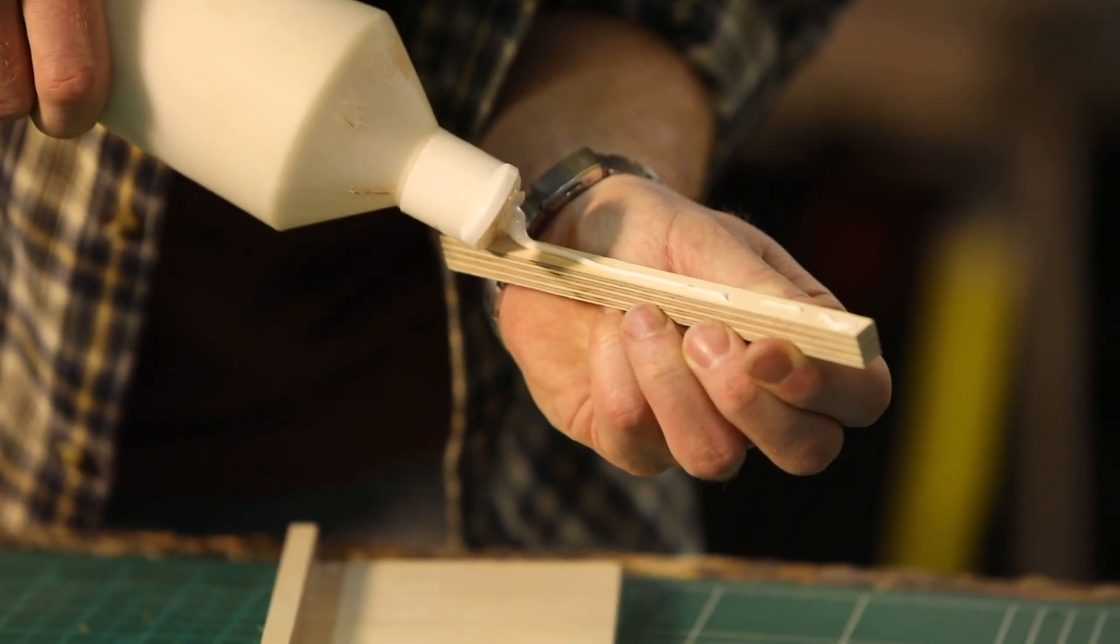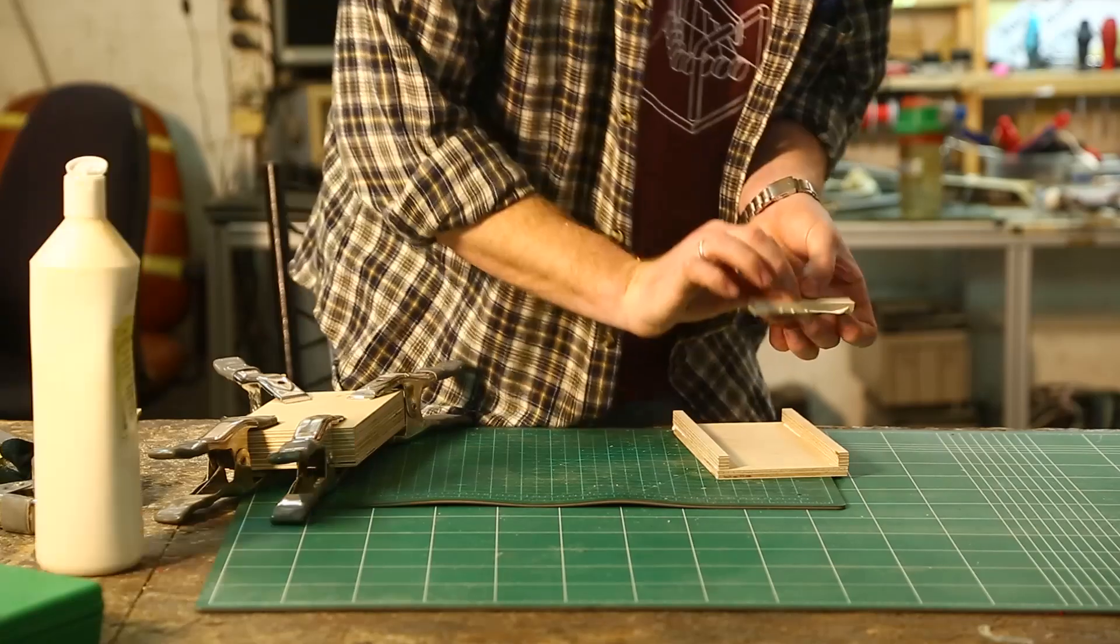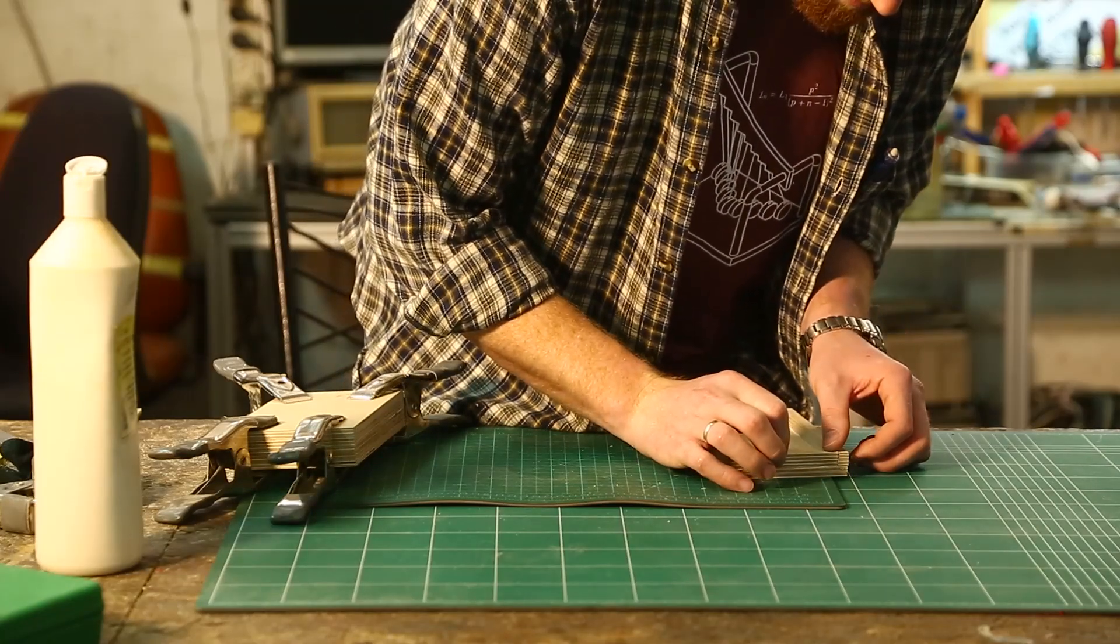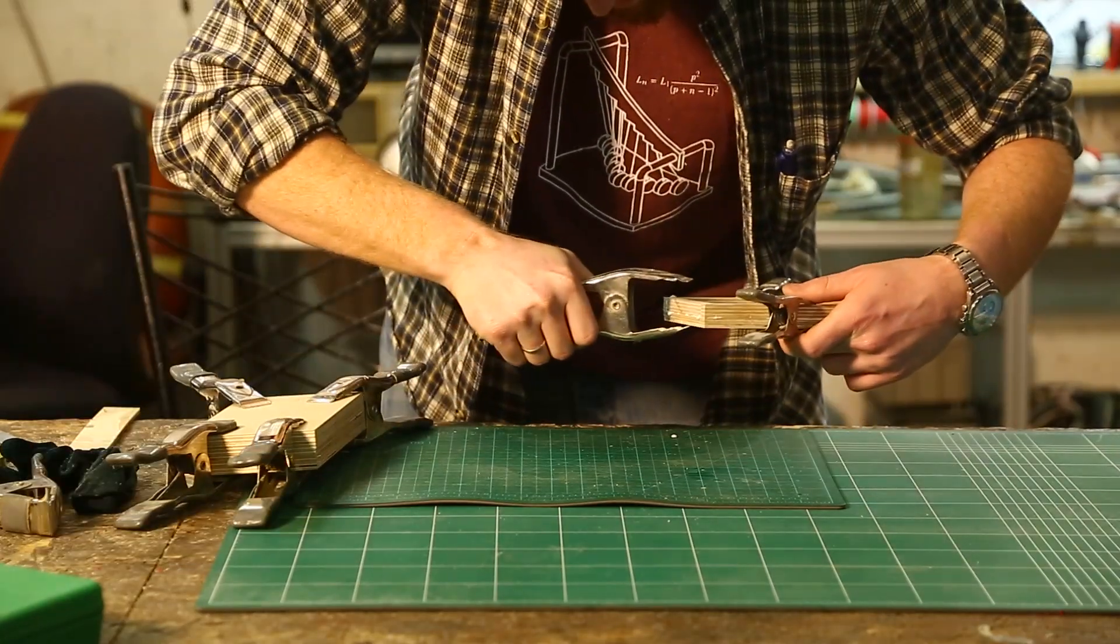The bottom part of the holder will have a compartment to hold additional curves that the rod can fit through. The compartment is made by gluing thin strips of plywood on three of the sides.